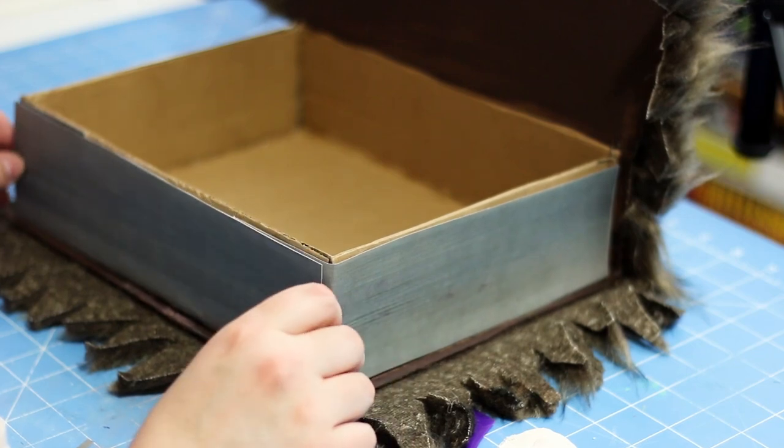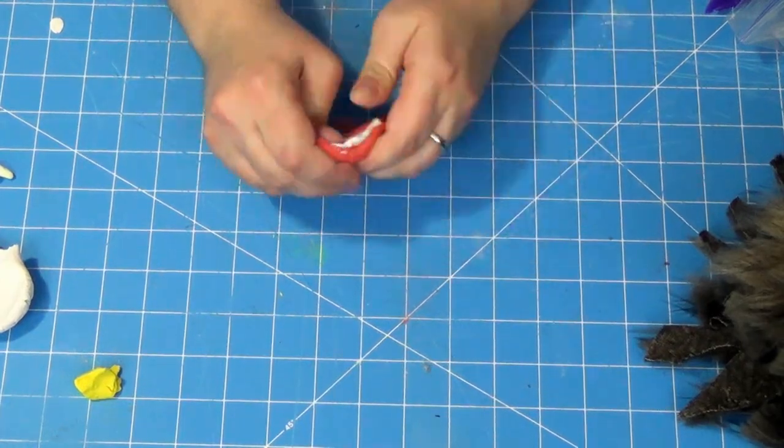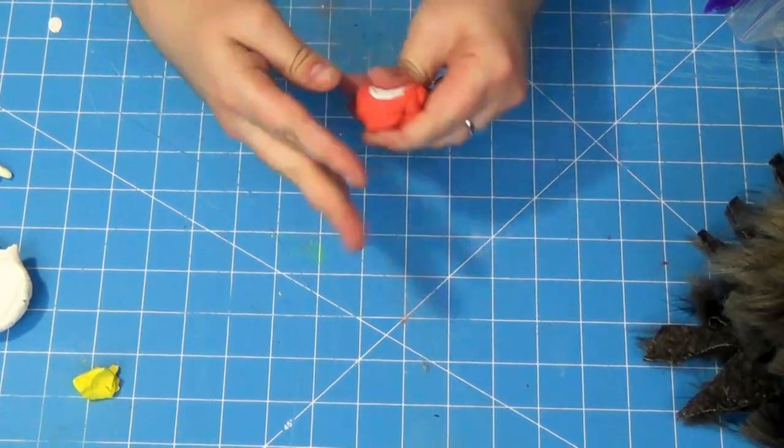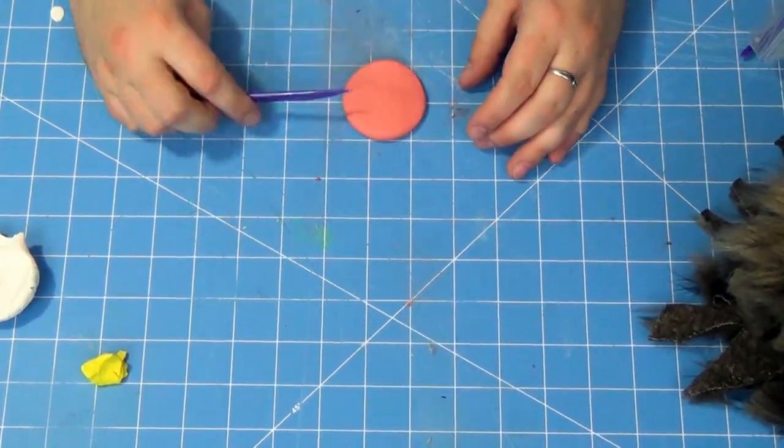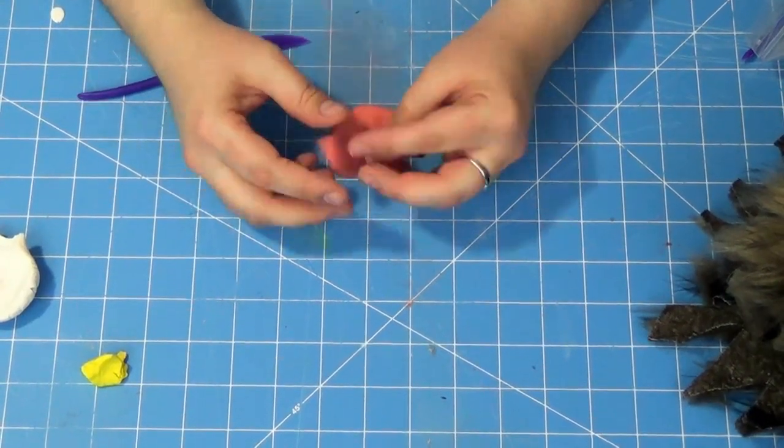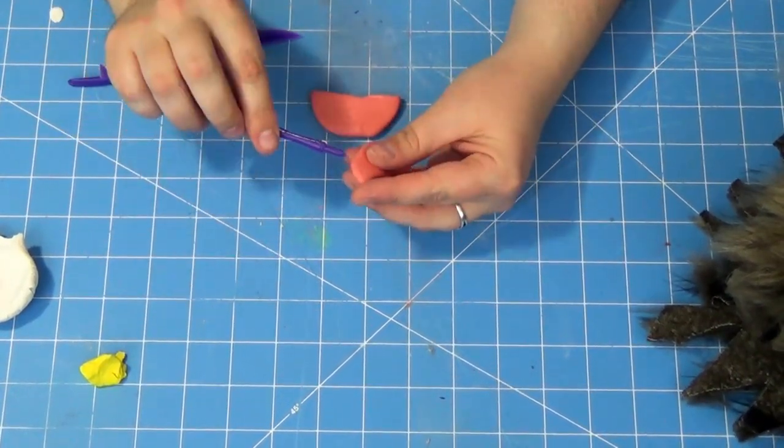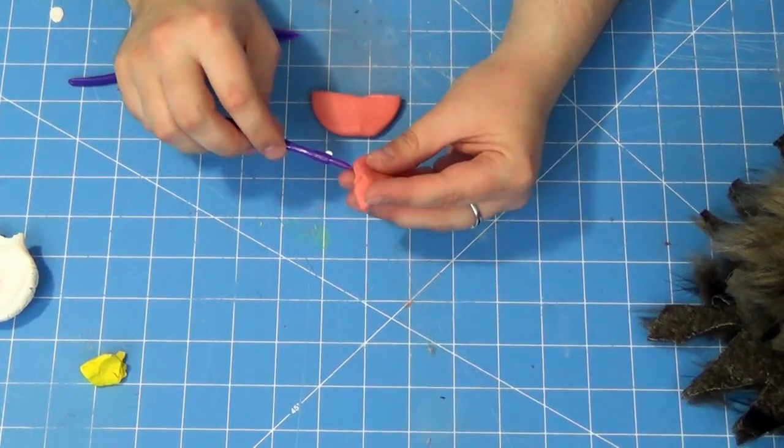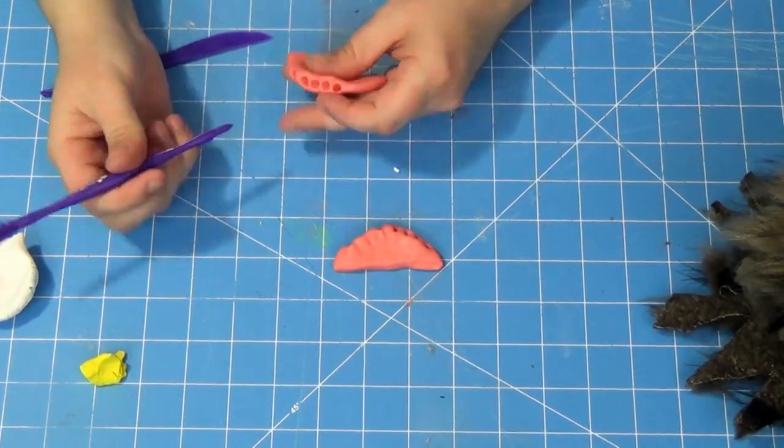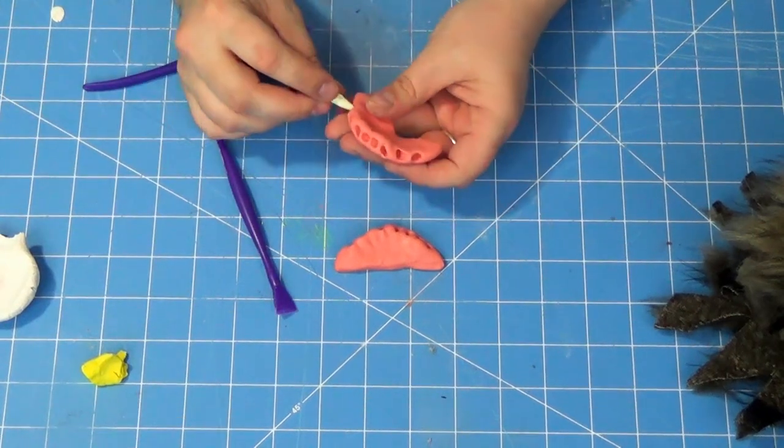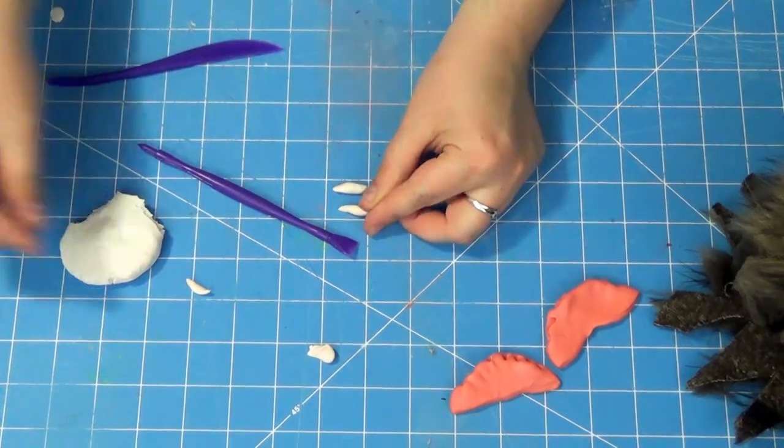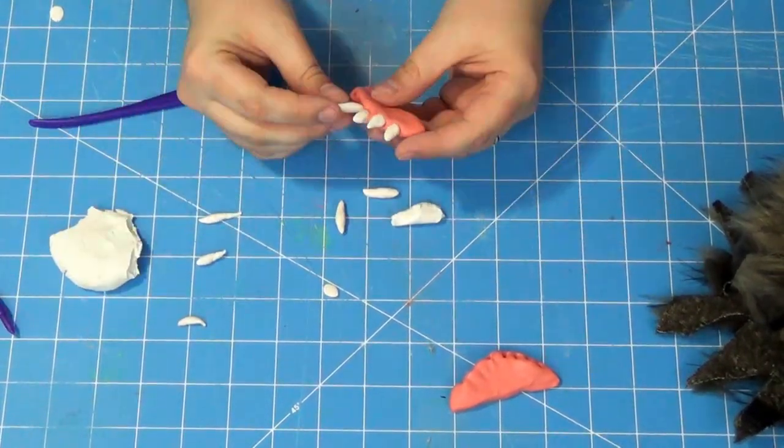To top it all off, I had to make some creepy teeth. So using some red and white polymer clay, I kneaded the two together to kind of get a pinkish mix. Roll it out and form two half circles. Then using the pointy polymer clay tool, I poked about eight holes into the edges. Then just roll out some little pieces of white polymer clay into pointy teeth and wedge those into the little holes.